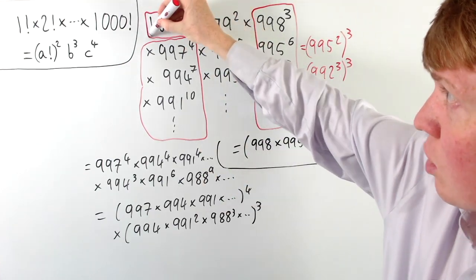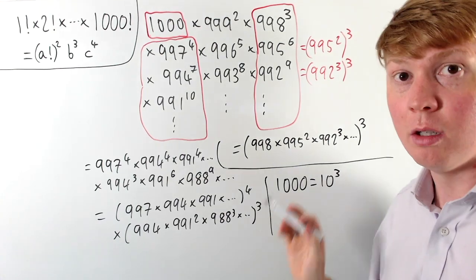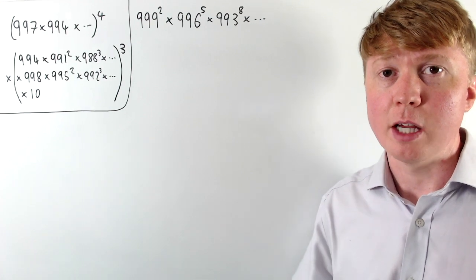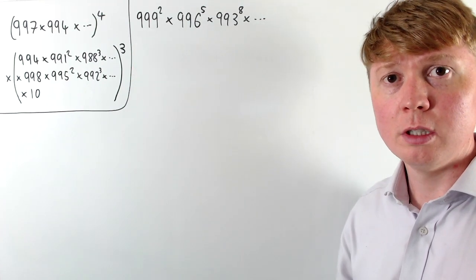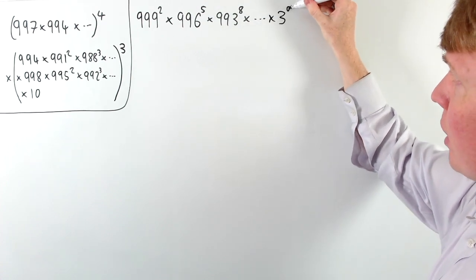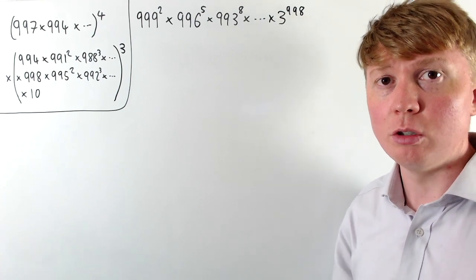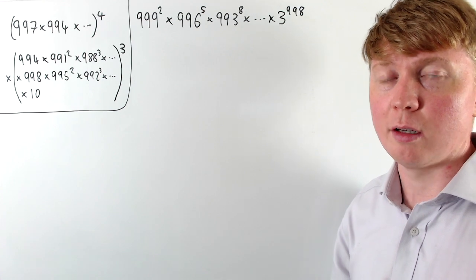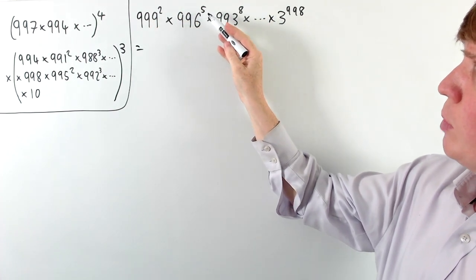We can deal with the remaining term at the top, the 1000. This is very fortunate because 1000 = 10³, so we can add this into our power-of-3 contribution. Now we need to deal with the remaining terms from the product. This is where we take advantage of the fact that we're allowed a factorial number squared in our final expression, because so far we've only taken out powers of 3 and powers of 4. These remaining terms are all multiples of 3 raised to various powers, with the end term being 3 to the power of 998.